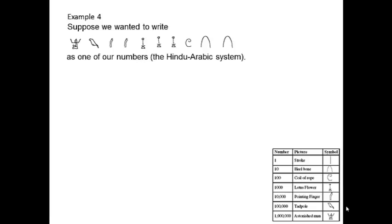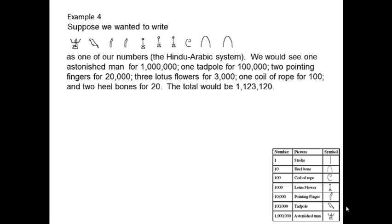Fourth example: suppose we want to write this Egyptian numeral in our number system. We see that there is an astonished man for a million, a tadpole for a hundred thousand, two pointing fingers at ten thousand each — that's twenty thousand — three lotus flowers for three thousand, one coil of rope for a hundred, two heel bones for twenty. So the total is one million, one hundred and twenty-three thousand, one hundred and twenty.